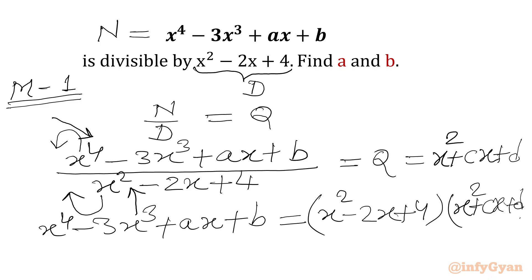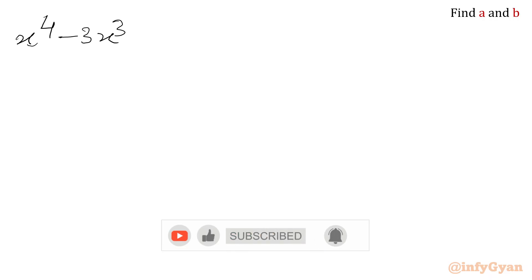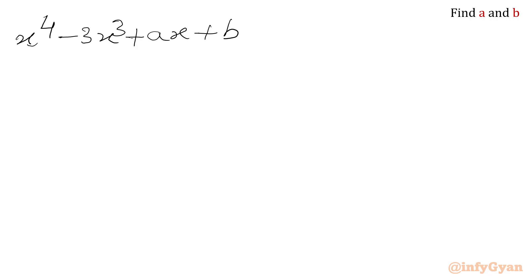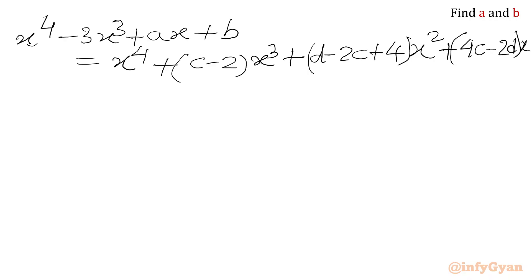Now we have to multiply and simplify the RHS. After multiplication, the LHS is x⁴ minus 3x³ plus ax plus b. On the RHS the leading term is x⁴, then the coefficient of x³ is (c minus 2), the coefficient of x² is (d minus 2c plus 4), the coefficient of x is (4c minus 2d), and the constant term is 4d.